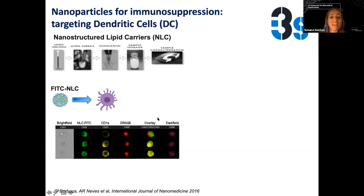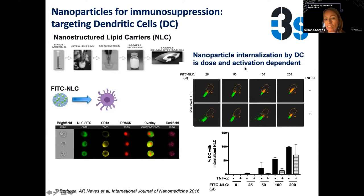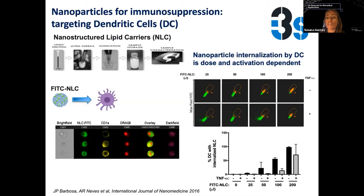We can confirm the nanoparticles are inside the cell and, importantly in terms of toxicity, that the nuclei are intact — no nucleus augmentation or cell bulging from internalization. This technique also lets us quantify how many cells have particles internalized. The uptake depends on material concentration — more concentration means more cells with internalized particles — but also, crucially, on the activation status of the cells. Cells previously exposed to an inflammatory condition show different uptake.